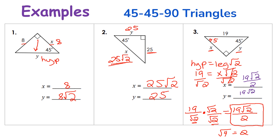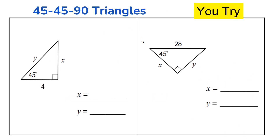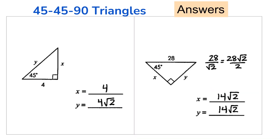Both x and y are legs, so they are congruent — both equal 19 times the square root of two over two — because legs are congruent in a 45-45-90 degree triangle. Go ahead and pause the video to try the next two problems on your own, then check your answers. In the second practice problem, you need to rationalize the denominator by multiplying by the square root of two, and that 14 comes from simply dividing 28 by two.